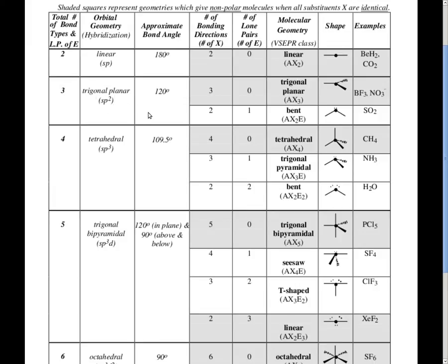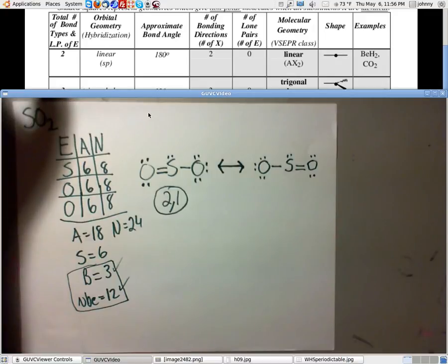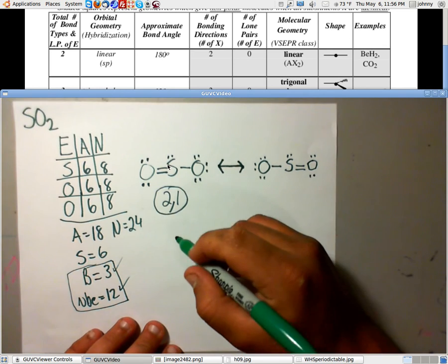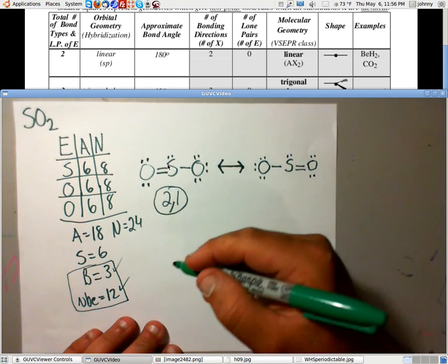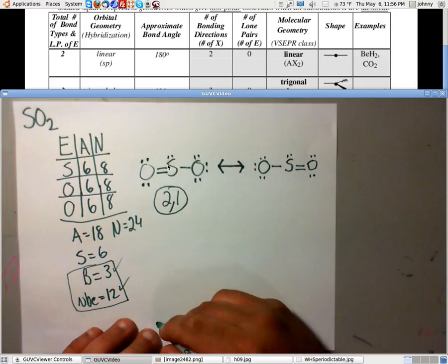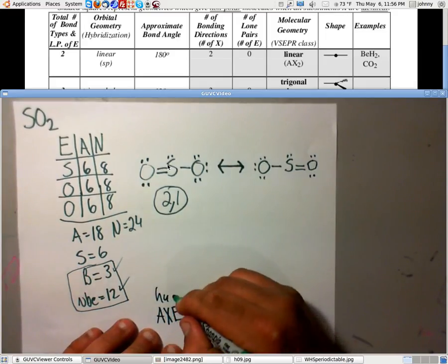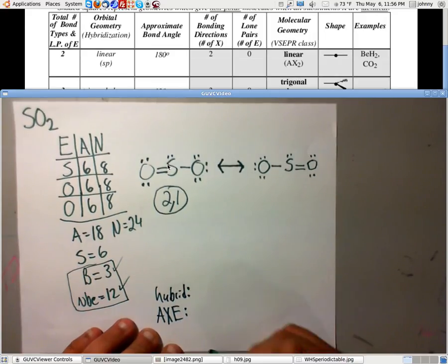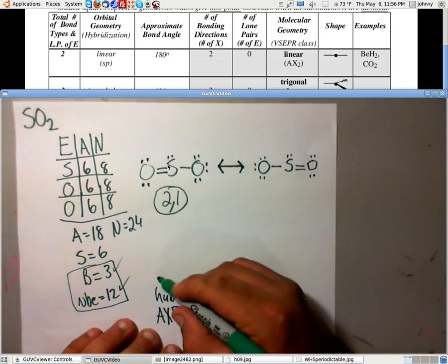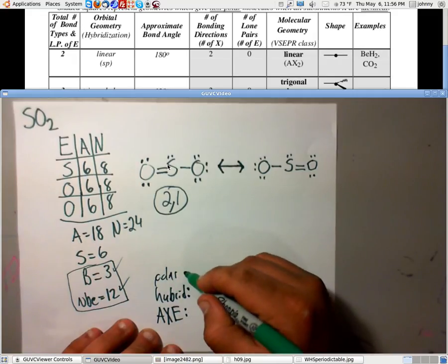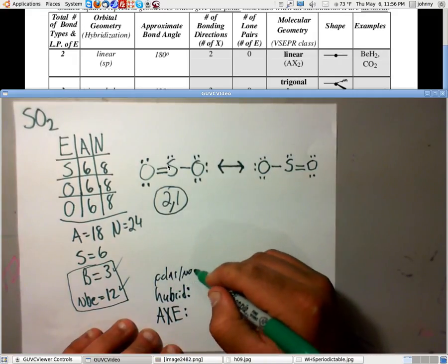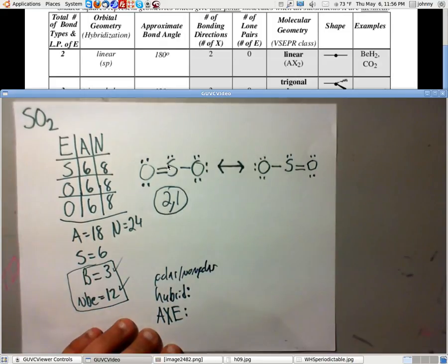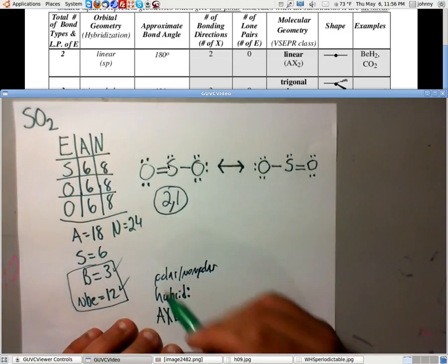So, anyway. Now, let me go ahead and just write those down for you as far as what we're looking for. Even though you could do this yourself. Now, we need the AX notation. Okay? We need the hybridization. We need, what was the other one? Oh, we need to know if it's polar or non-polar. We need to know molecular geometry.